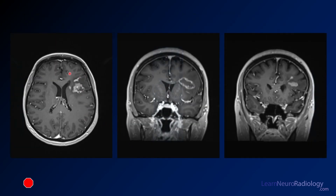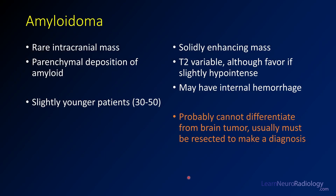This is a case of an amyloidoma. These amyloidomas are rare intracranial masses with parenchymal deposition of amyloid. They tend to affect slightly younger patients than cerebral amyloid angiopathy. You get solidly enhancing or peripherally enhancing masses with a more hypointense center than other tumors. They may have some internal hemorrhage, and some of that T2 hypointensity can be from old blood products. It can be very challenging to differentiate these from brain tumors, and usually they have to be resected or biopsied to make that diagnosis.